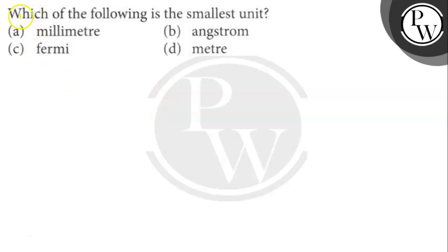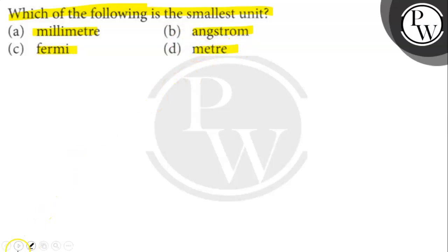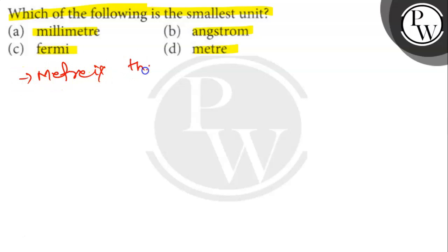Let's read the question. Which of the following is the smallest unit: millimeter, Angstrom, Fermi, or meter? Let's find out. Meter is the SI unit of length.